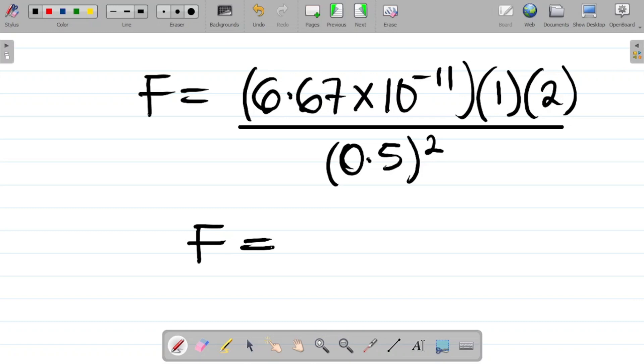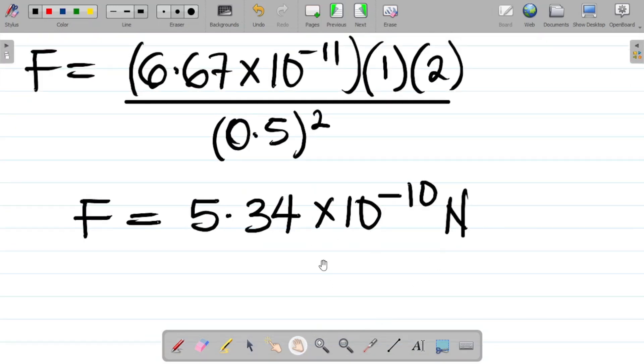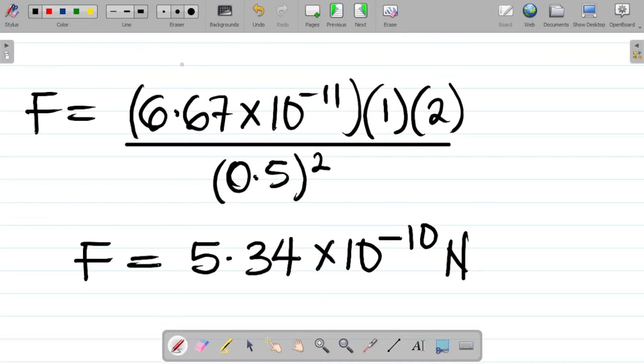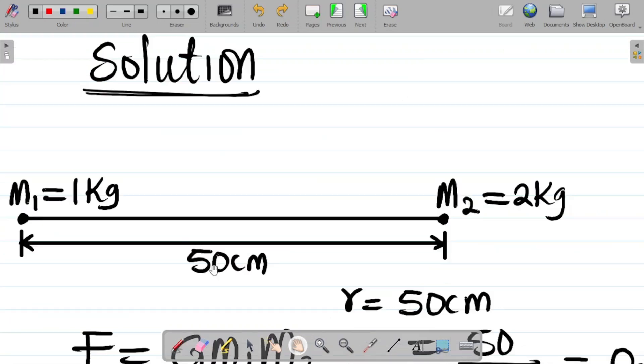So if I work on this question here, I have F. I'll just go straight to punching everything to get my final answer. If I punch everything, what I have here is 5.34 approximately times 10 to the power minus 10. Since I'm calculating for force, this will give you Newton. So if you punch correctly, you have this as your answer. Punch this fraction correctly, you have your answer as 5.34 times 10 to the power minus 10. Of course, force is in Newton.